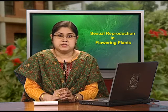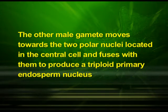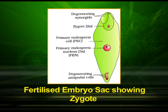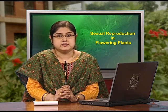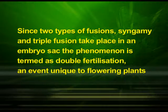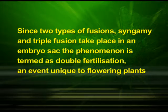The other male gamete moves towards the two polar nuclei located in the central cell and fuses with them to produce a triploid primary endosperm nucleus. Because this process involves the fusion of three haploid nuclei, it is termed triple fusion. Since two types of fusions — syngamy and triple fusion — take place in an embryo sac, the phenomenon is termed double fertilization, an event unique to flowering plants.